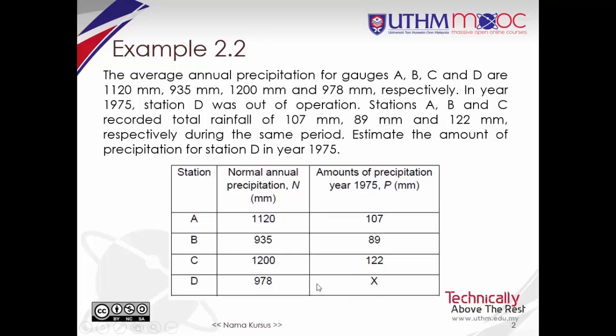Stations A, B and C recorded total rainfall of 107mm, 89mm and 122mm during the same period. Estimate the amount of precipitation for station D in year 1975.